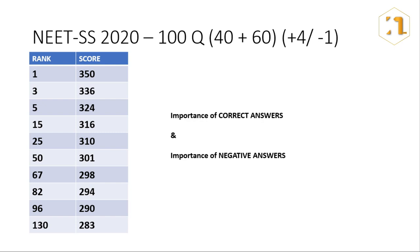So here's a tabular column which shows us the rank and score of people in the NEET SS 2020 examination for nephrology. You can see that rank 1 has got 350, rank 3 has 336, rank 5 has 324, and so on. So I feel that we all have to aim to get into the top 50 at least.